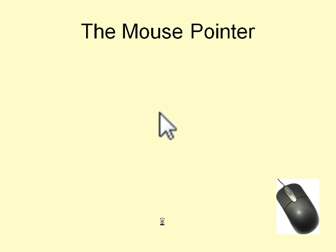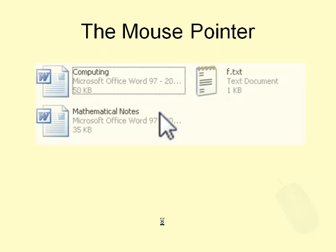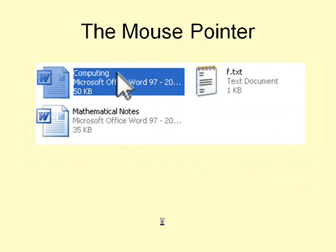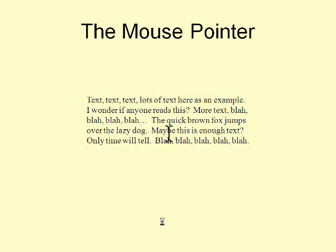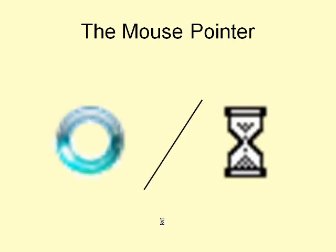The mouse pointer changes appearance depending upon what you are doing with the computer. It appears as an arrow when you are selecting and clicking on things. When you click on a hyperlink on the web it appears as a hand. When you are working with text it appears as an eye shape. And when the computer is busy and you are waiting for it to do something, it appears as an hourglass or a circle.